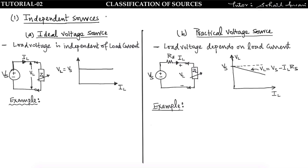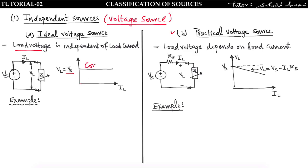In independent sources, let us consider first the voltage source. There are two types: ideal voltage source and practical voltage source. In an ideal voltage source, load voltage is independent of load current. No matter what the value of current is, the load voltage remains constant — this is the property of an ideal voltage source.